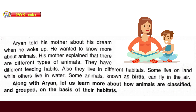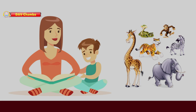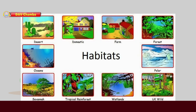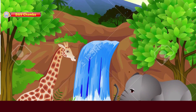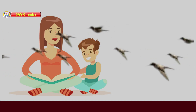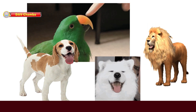Aryan told his mother about his dream when he woke up. He wanted to know more about animals. His mother explained that there are different kinds of animals. They have different feeding habits — feeding habits means eating habits. Also, they live in different habitats. Habitat means the place where an animal lives. Some animals live on land while others live in water, and some animals known as birds can fly in the air. In this video we have seen many animals, and in the next video we will learn about their habitat. Thank you.